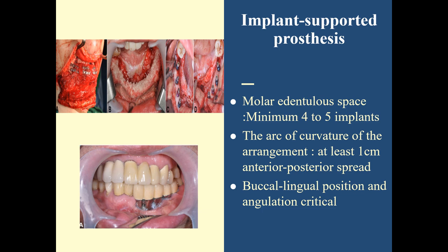The proper arrangement of implants is critical. The arc of curvature of the arrangement must result in at least a 1 cm anterior-posterior spread, which is the distance measured from the most anteriorly placed implant to the posterior one — the greater the AP spread, the greater the stability of the prosthesis. The buccolingual position and angulation of the implant are also important; implants should be positioned so that the screw axis channel exits through the cingulum area of anterior teeth and the central fossa of posterior teeth.